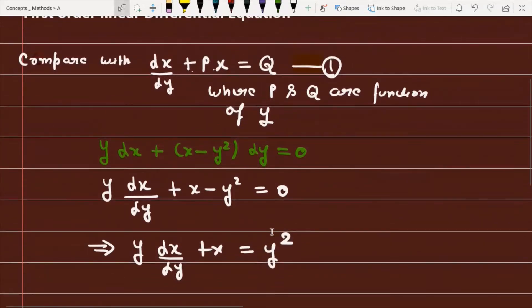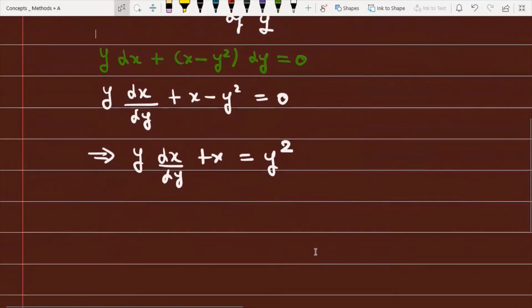Now, if you compare with the standard form dx/dy + px = q, where p and q are functions of y, we can divide the equation by y. This gives us: dx/dy + (x/y) = y.